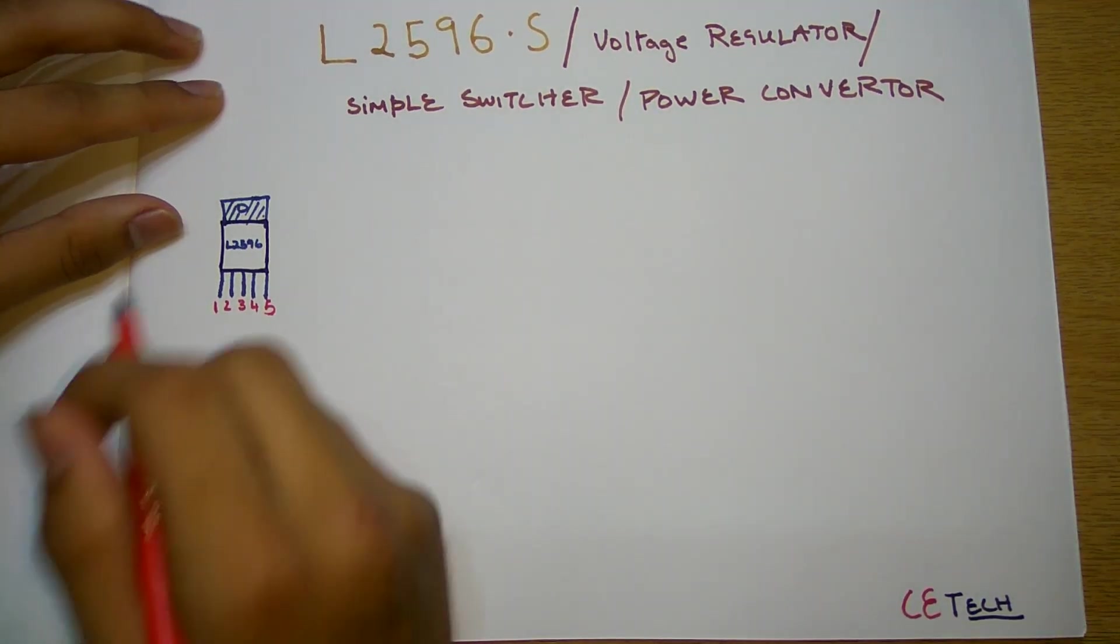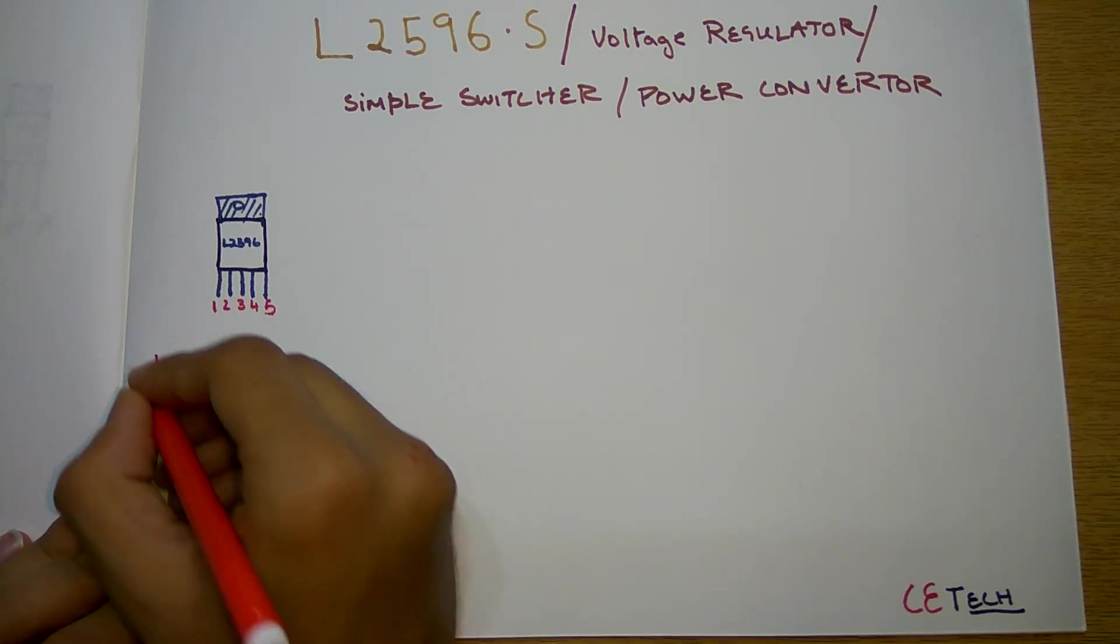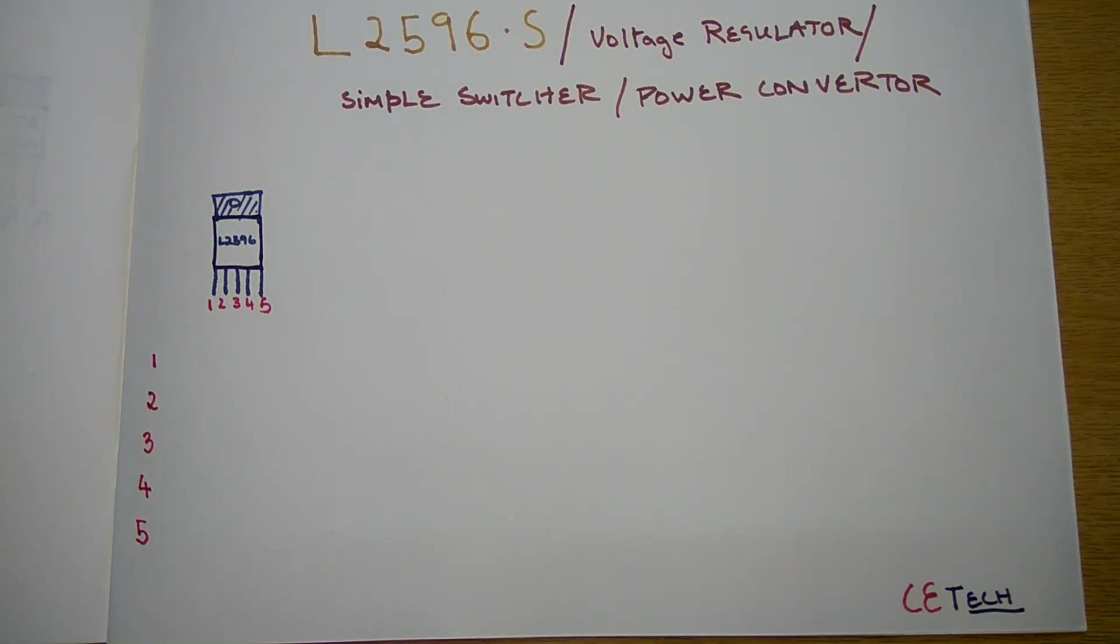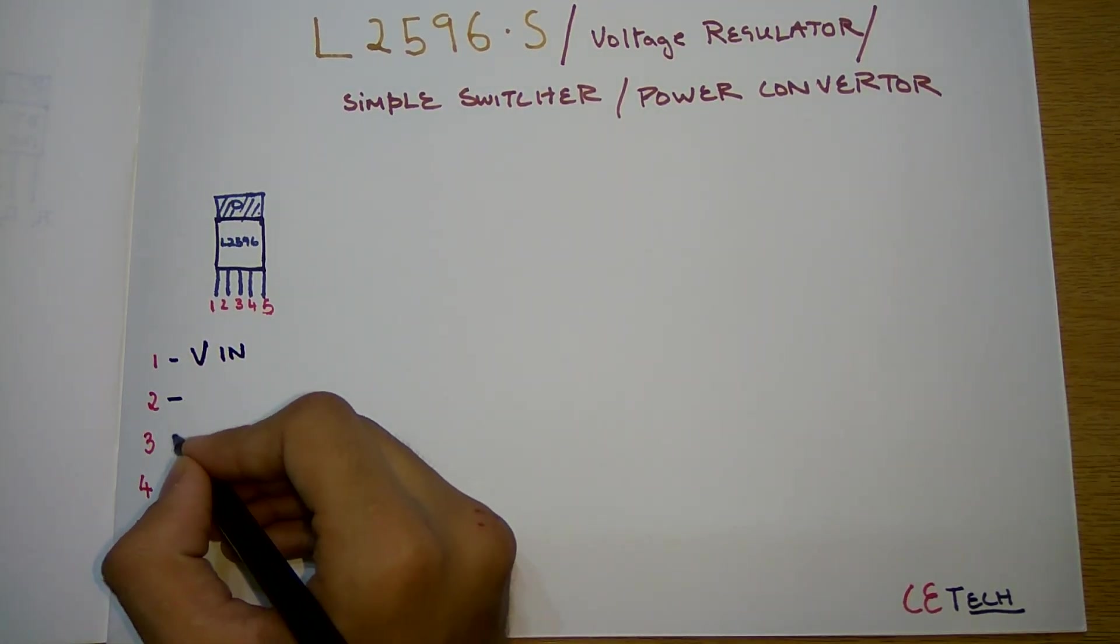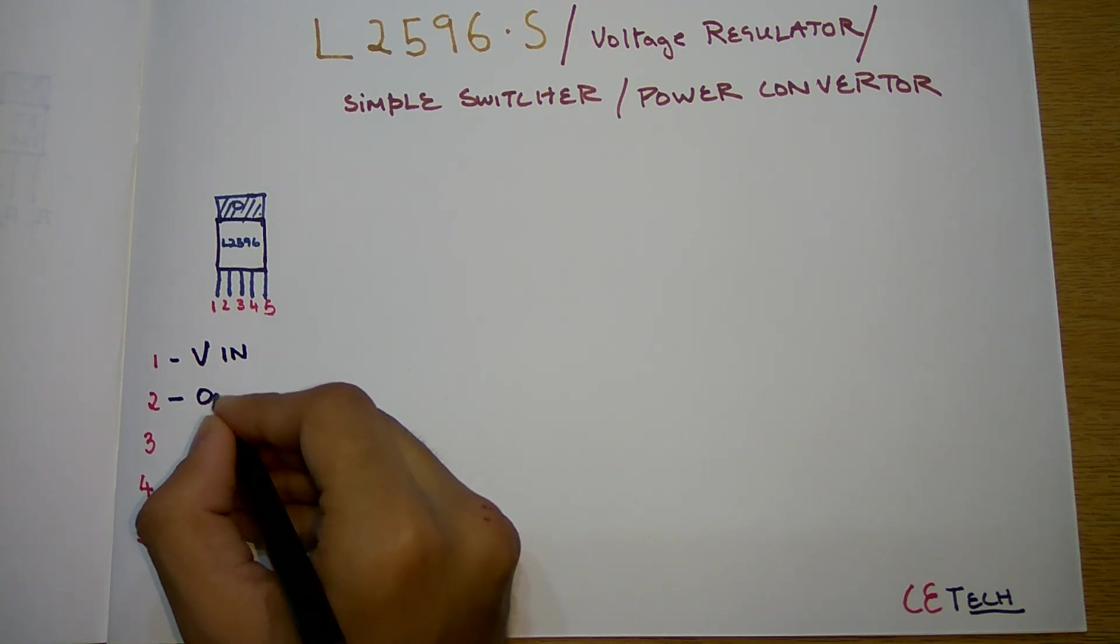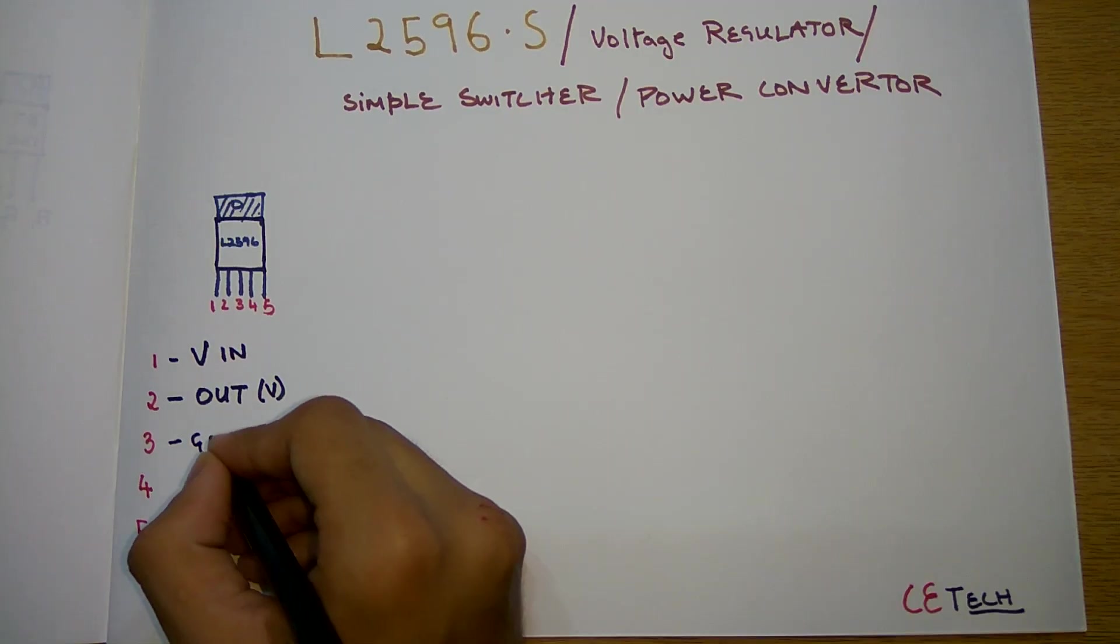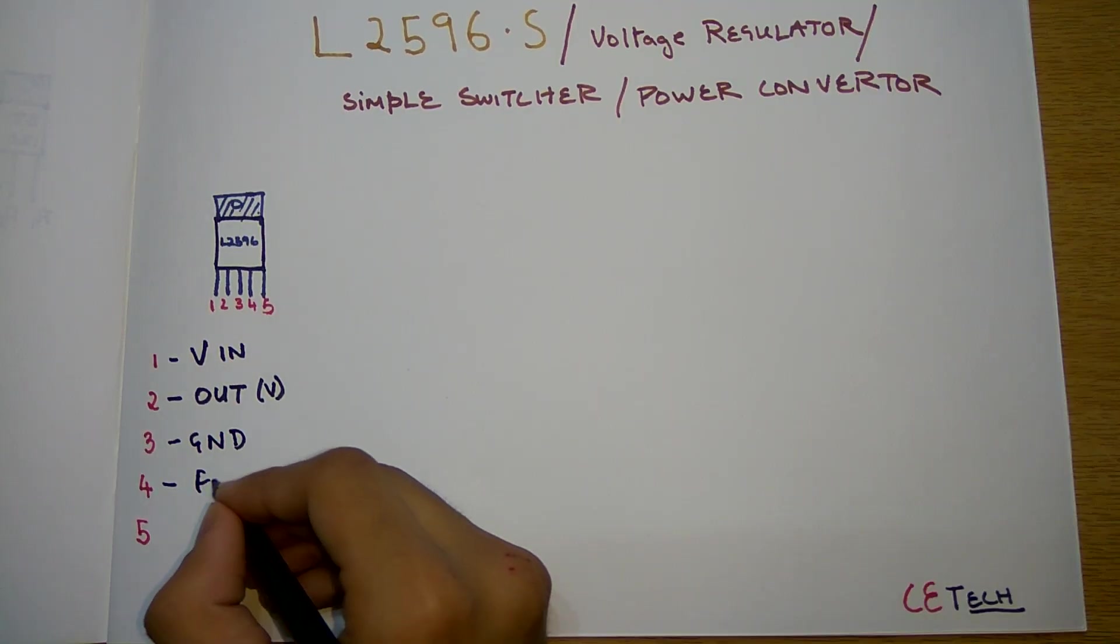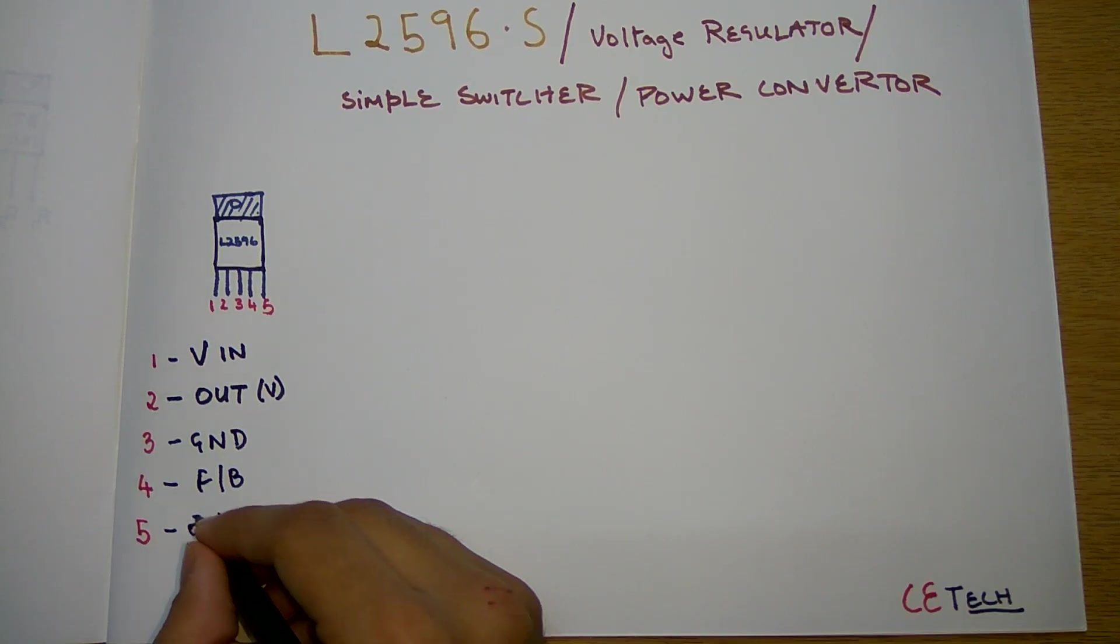So this is the basic pinout of this. Let's check out what are the pins and for what purpose are these. So 1, 2, 3, 4, and 5. The first pin is the voltage in, the second pin is the out pin, the third pin is the ground pin - these are the three major pins. The fourth pin is the feedback pin and the fifth pin is the on or off pin.